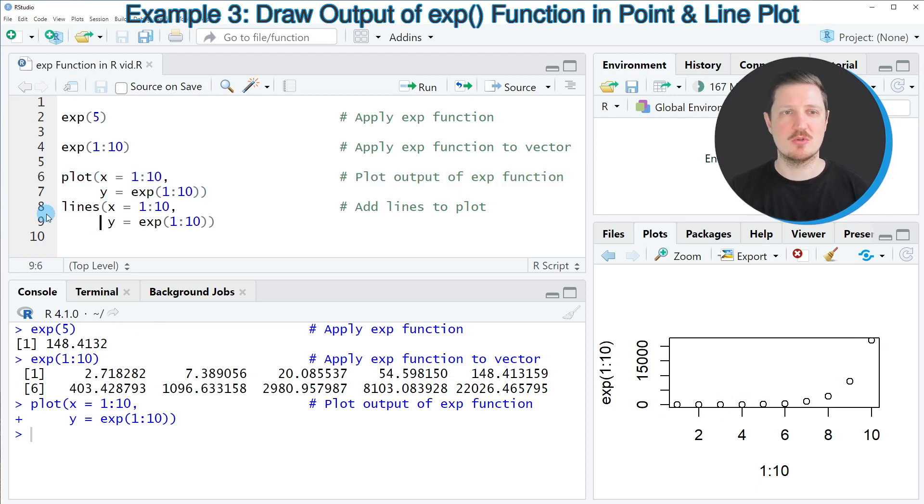And then on top of that, we could also draw a line plot that is connecting our lines, as you can see in lines 8 to 9. So after running this line of code, our plot is updated and is now also showing an exponential line.